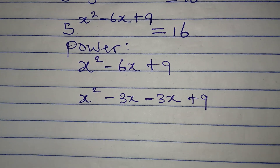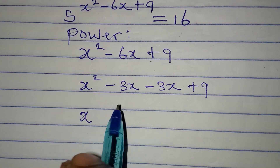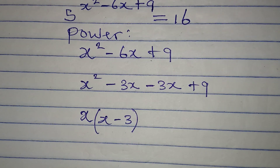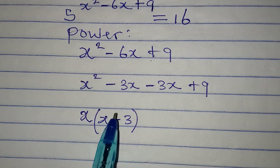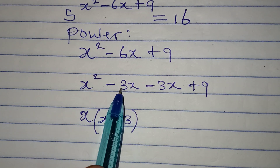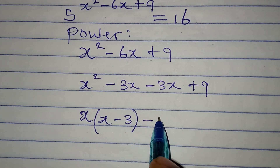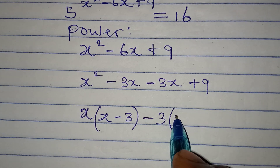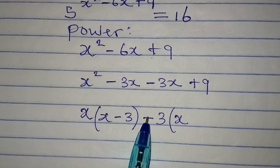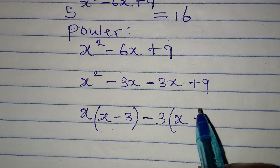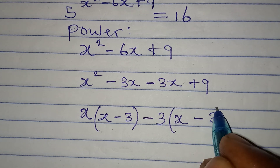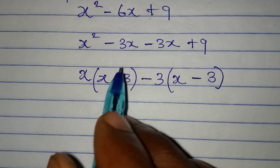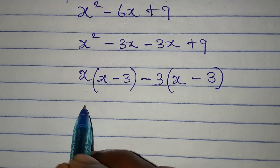Now I'll group into two and factorize. Factorizing the first two terms gives x minus 3 in the bracket — x has come out and there's another x, then 3 comes here. What comes out next is minus 3, and then we have x left over here; negative times positive gives negative, and 3 into 9 is 3. So we close the bracket and factor out x minus 3.